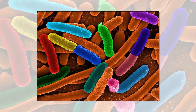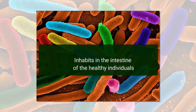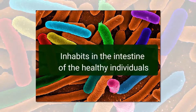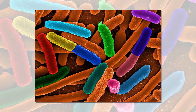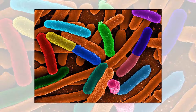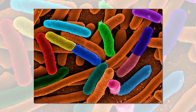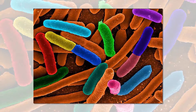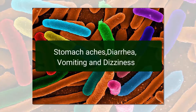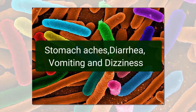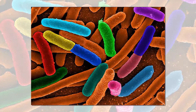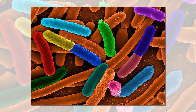E. coli inhabits the intestine of healthy individuals. E. coli gets access to the body when a person eats fruits and vegetables that have not been washed. This leads to stomach aches, diarrhea, vomiting, and dizziness among other symptoms. This bacterium is known for being very resistant to antibiotics.